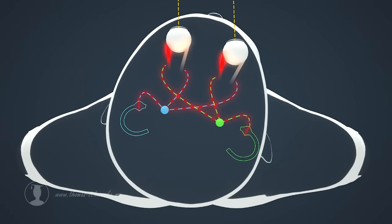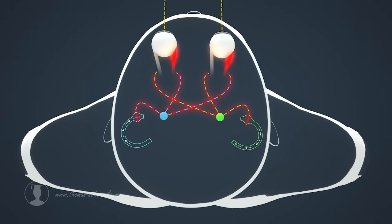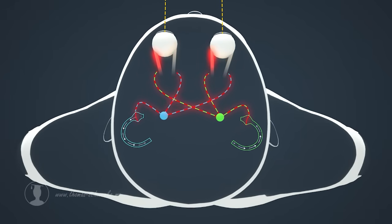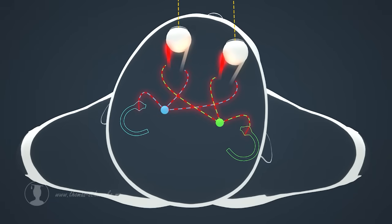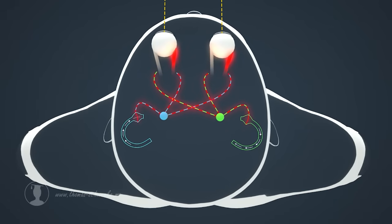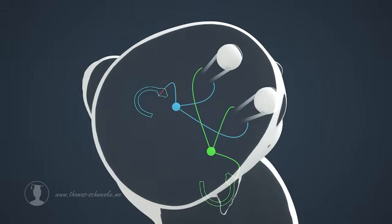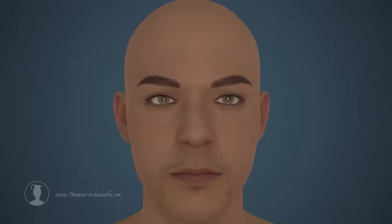The muscles are correspondingly contracted on one side and relaxed on the other. In this way, the eyes remain fixed on one point, even with smaller or larger head movements. This focusing of the eyes on one point when the head moves is known as the vestibulo-ocular reflex.